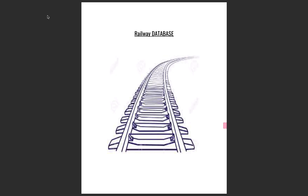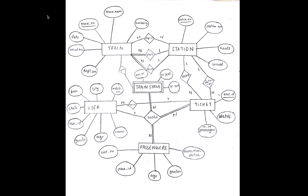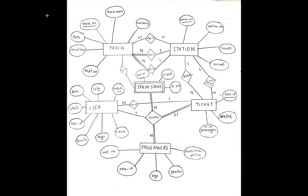The Railway Database is a very huge database with various functionalities. In this project, I have taken some of the important functionalities and implemented them. Before we get started with the database, we need to know about the ER Diagram or Entity Relational Diagram. In my Railway Database, I have 5 entities: train, station, tickets, passenger, and user, and 1 weak entity which is the train status.